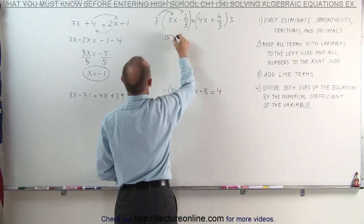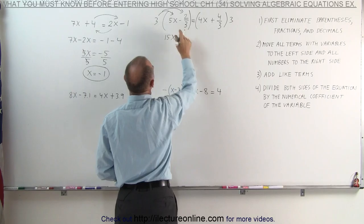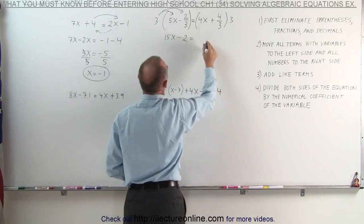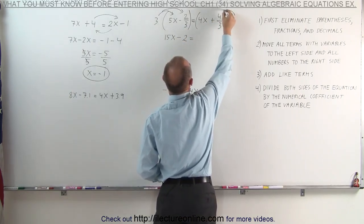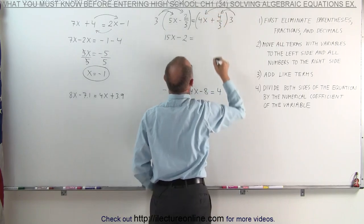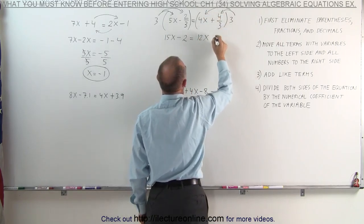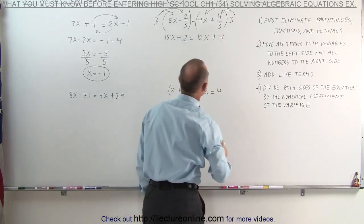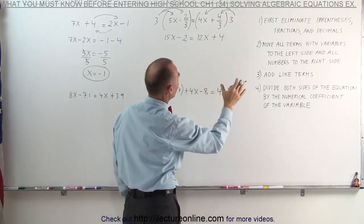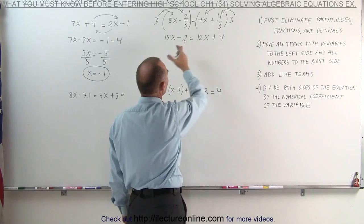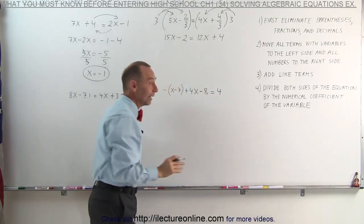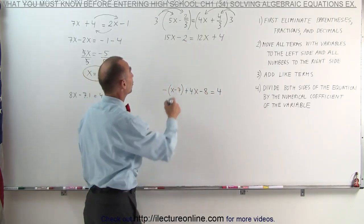...we end up with 15x minus, the 3 cancels out. I end up with a 2 equals 3 times 4. We distribute both terms inside the parentheses. That will give us 12x and the 3 cancels out here plus 4. Now we do step number 3, move all the terms with the x's to one side, all the numbers to the other side. Remember when you cross the equal sign, the sign changes.